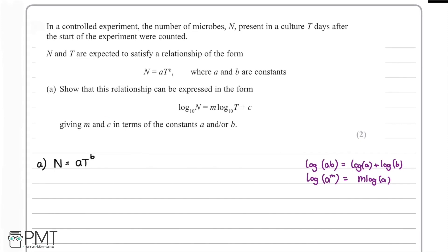In this question, there's a controlled experiment where the number of microbes, denoted by n, present in a culture t days after the start of the experiment were counted. We have two variables: the number of microbes and the time since the start of the experiment. There's a relationship given by n is equal to a times t to the power of b, where a and b are both constants.